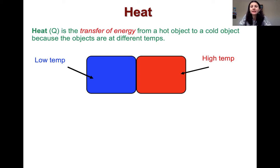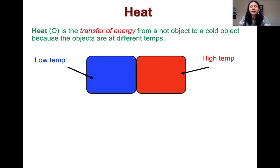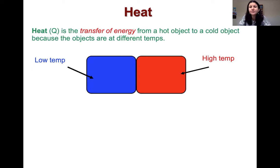How is that energy transferred? That energy is always transferred due to a temperature difference between two objects. So when you bring a cold object at a lower temperature in thermal contact with a hot object at a higher temperature, this temperature difference is what is going to allow for the transfer of heat. Heat really indicates the actual transfer of energy from one object to another. And the direction of that heat flow always goes from high temperature objects to low temperature objects.